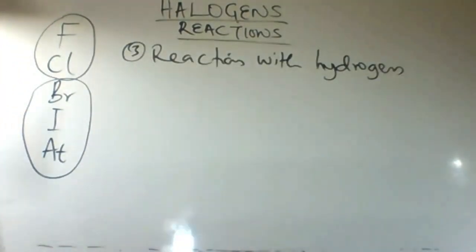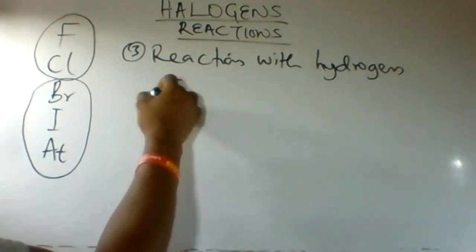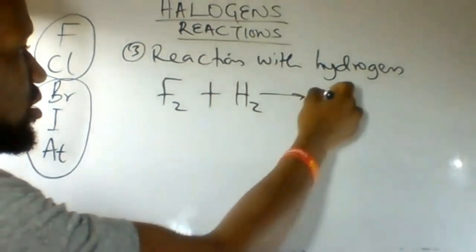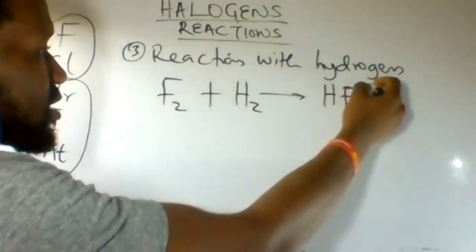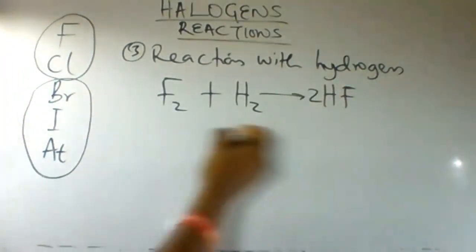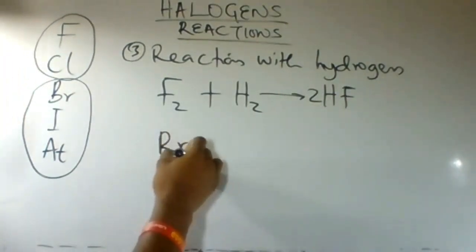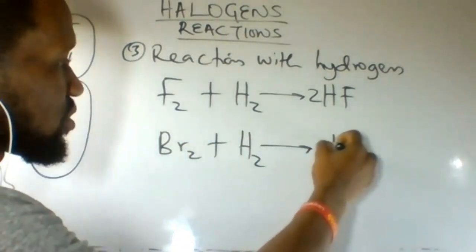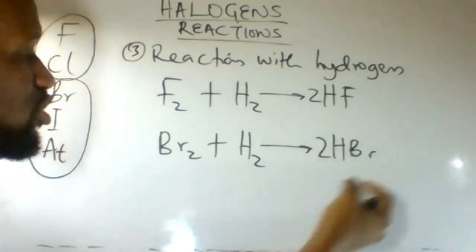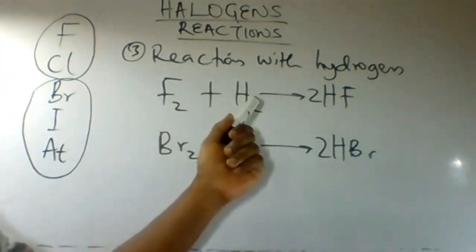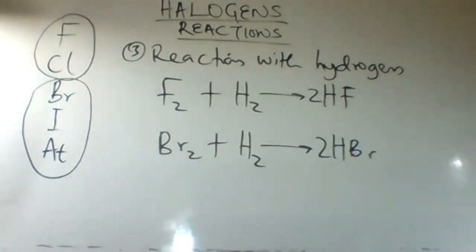Halogens can also combine with hydrogen to form acids. For example, F₂ combining with hydrogen gas can form the acid HF, hydrofluoric acid. Also, bromine combining with hydrogen gas forms HBr, hydrobromic acid. So halogens combine with hydrogen to form acids.